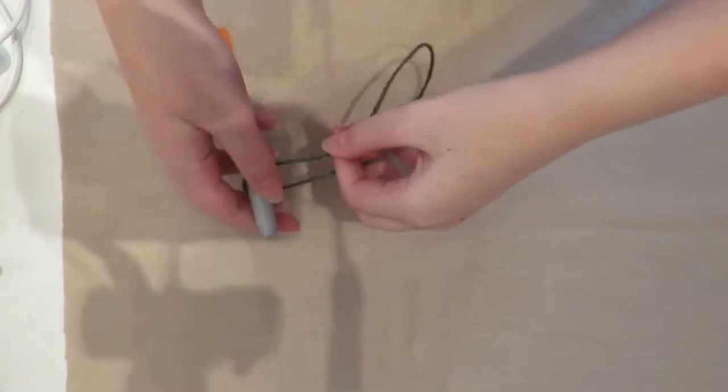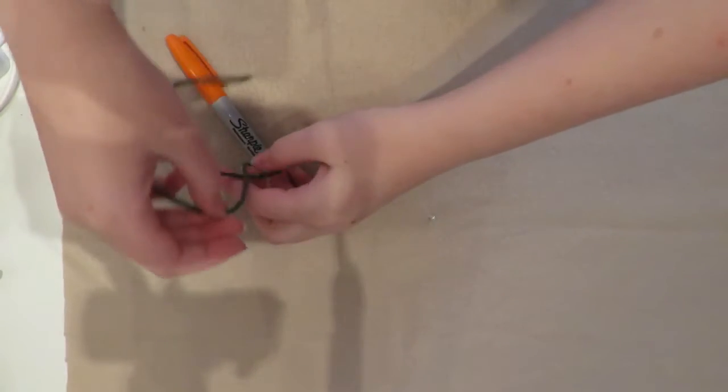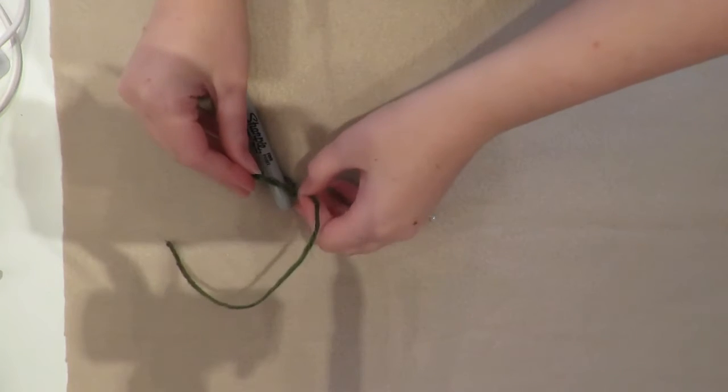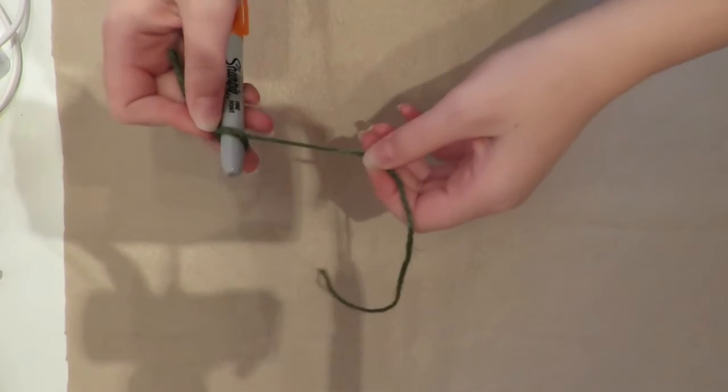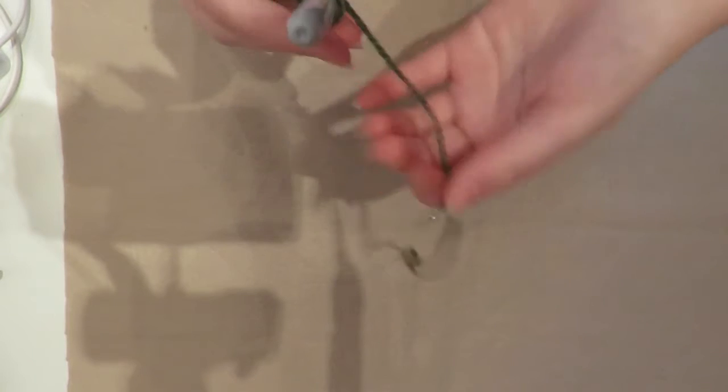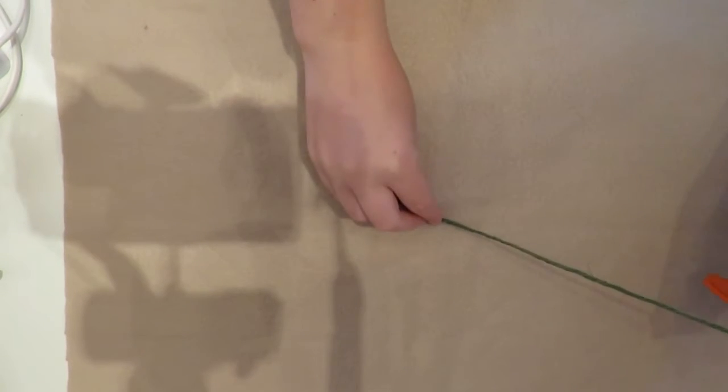You're going to start off by tying a knot around your pen with your string, and you're going to want to measure your string to the size that you want your doughnut to be. That's totally up to you—you can do whatever you want, how big or small you like it. Just don't forget about seam allowance.